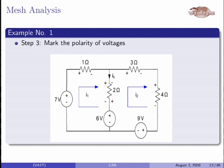If the current enters at a terminal, at that terminal we will mark the positive polarity. If the current leaves, we will mark negative at that terminal of the resistance. For the 1-ohm resistance, current I1 enters in this direction, so we mark positive there, and minus is marked at the terminal where the current leaves. Similarly, for every resistance and every mesh we mark the polarity. The 2-ohm resistance is common to both meshes, so polarity is marked on both sides corresponding to both currents.